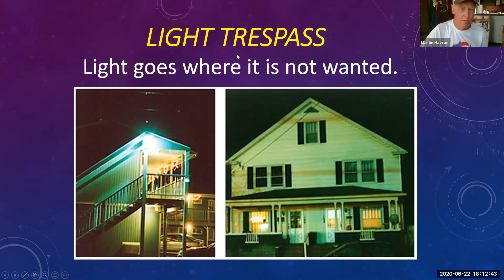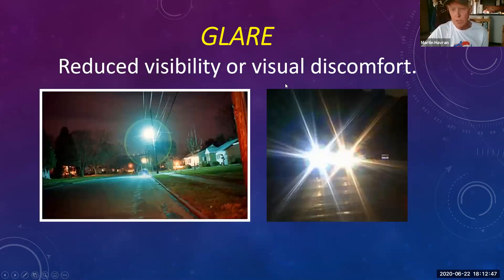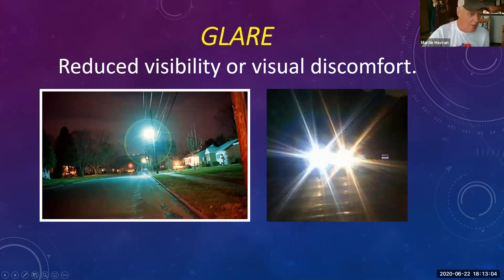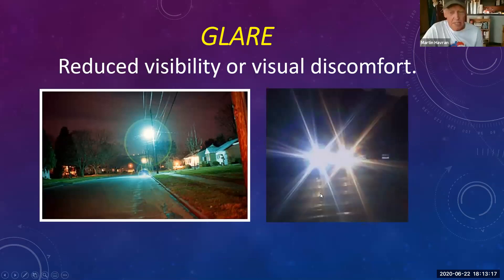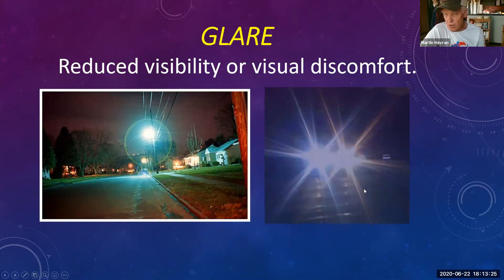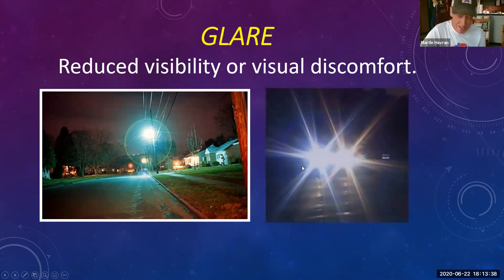Glare is reduced visibility or visual discomfort. On the left we have street lights that are completely unshielded — the light is going all over, up the power lines and trees, not restrained at all. On the right we have a vehicle coming with high beams on. You can see how intense that light is — a safety hazard. You really can't see anything other than the glare, so there might be large animals or pedestrians in the road that you cannot see.